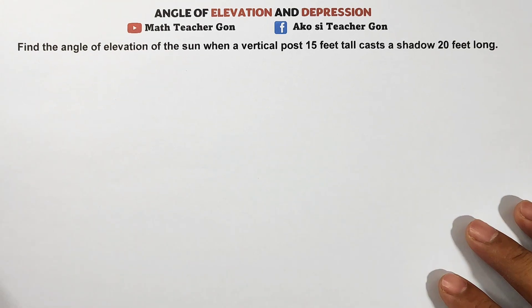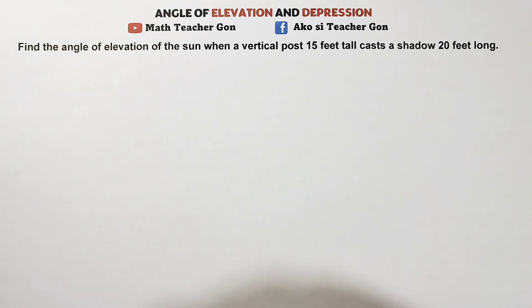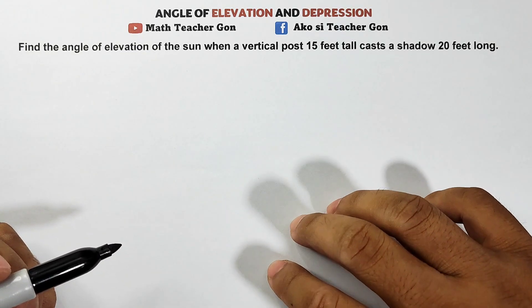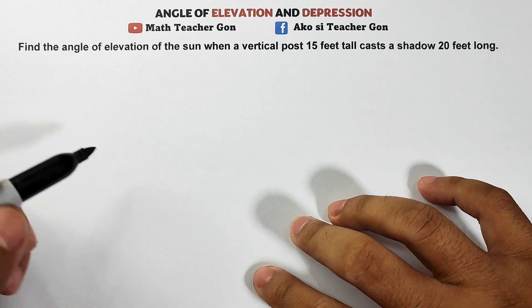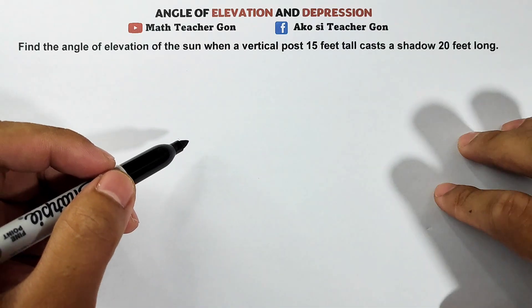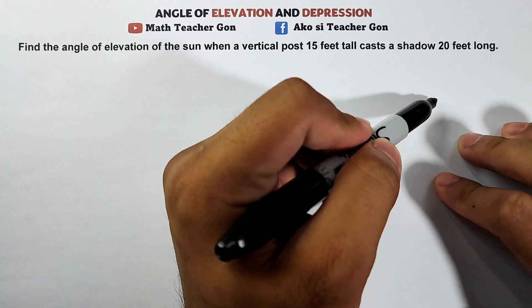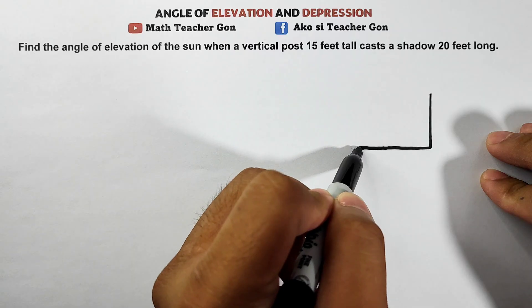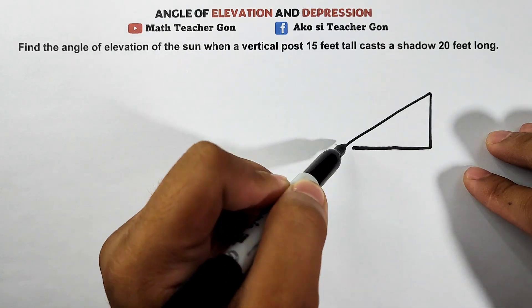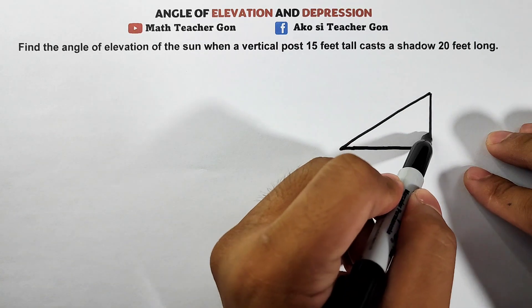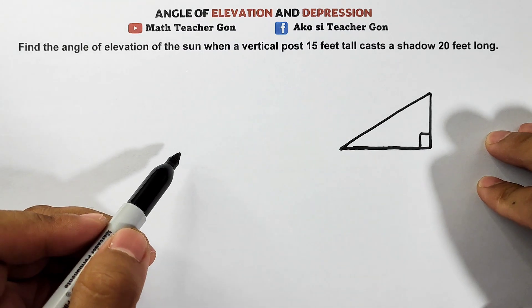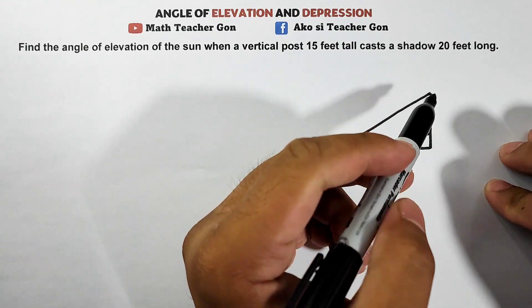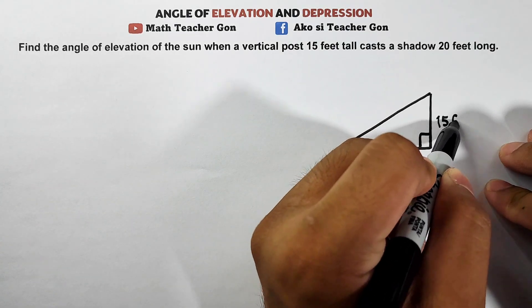So let's make our illustration. Hopefully the drawing is okay. Let's draw a right triangle. Let's try this orientation. It says a vertical post is 15 feet. This is the vertical post. This is 15 feet.